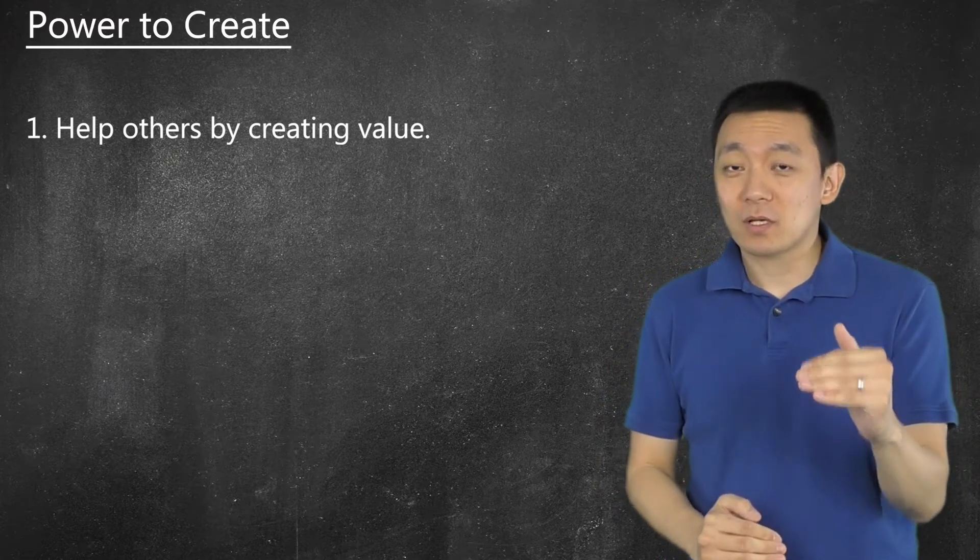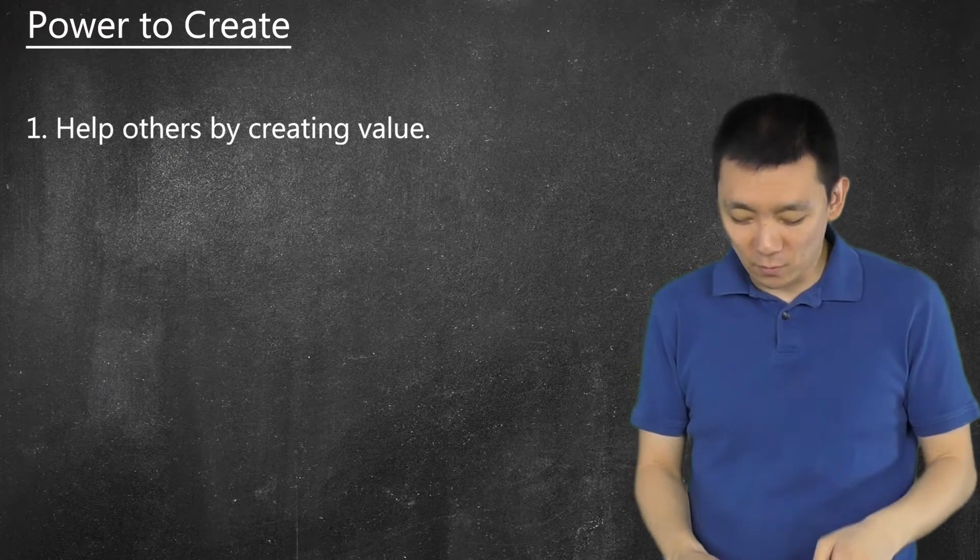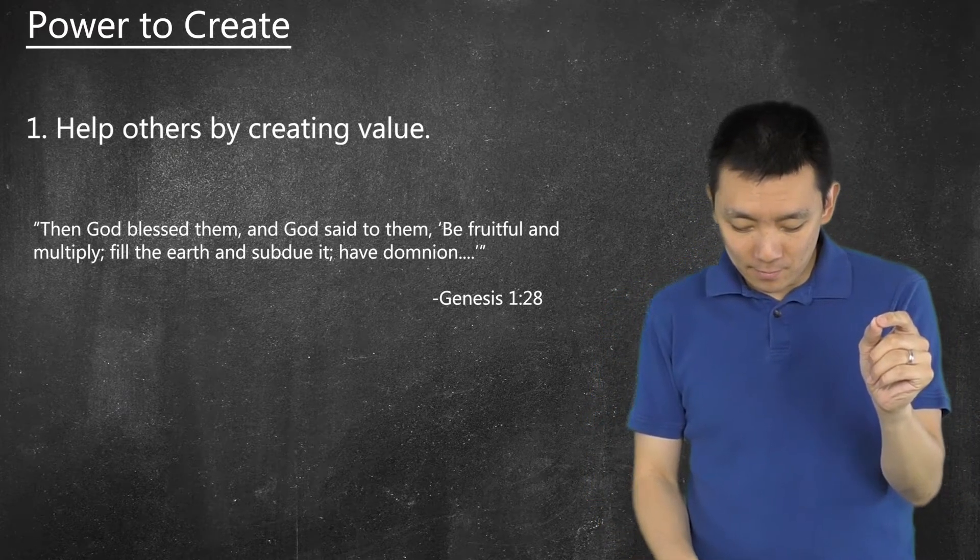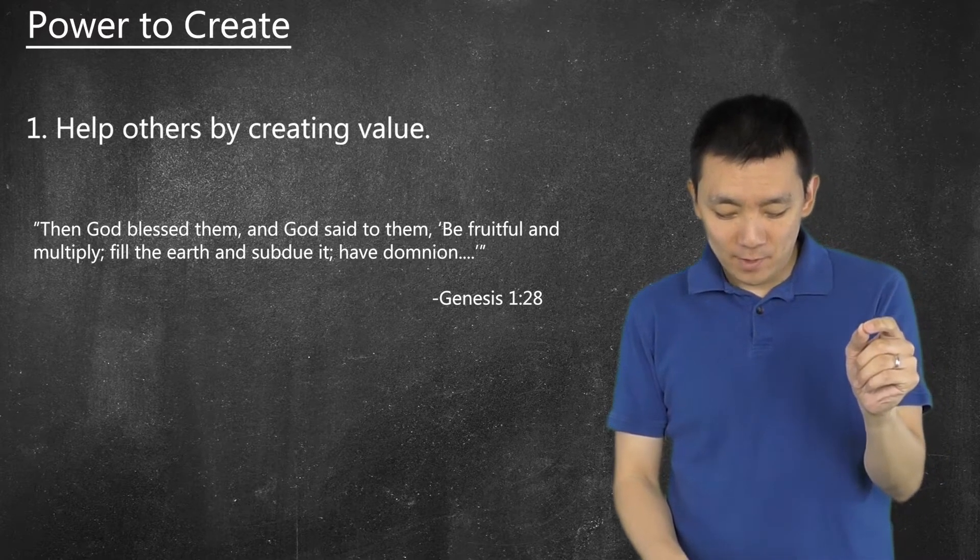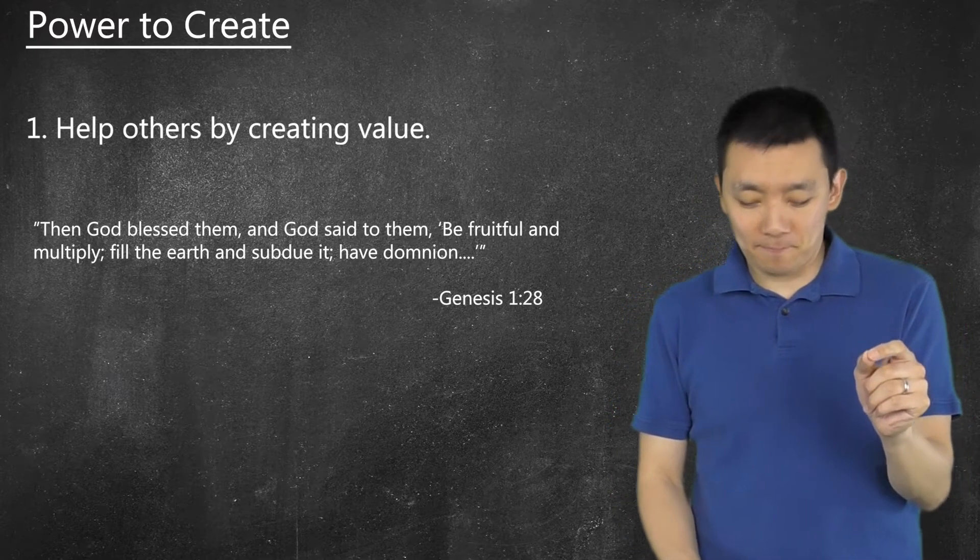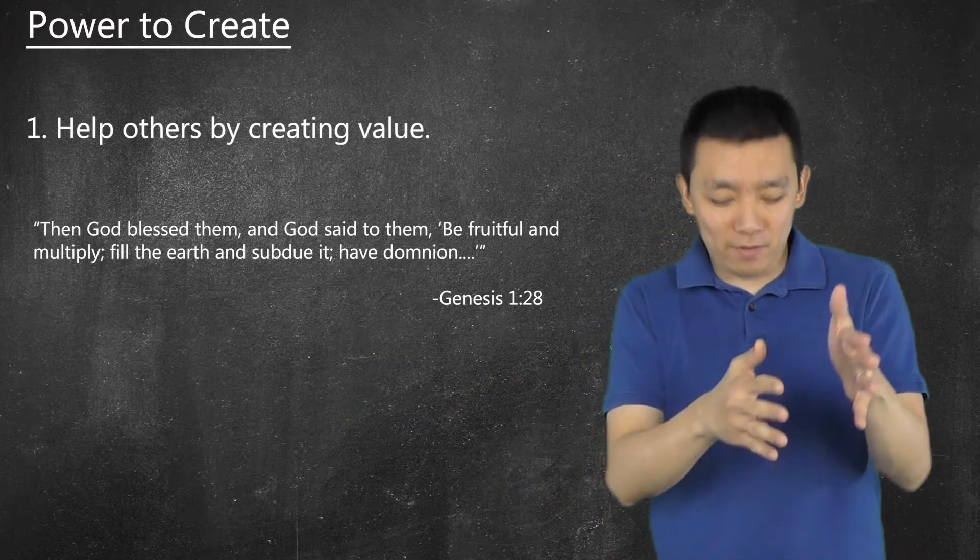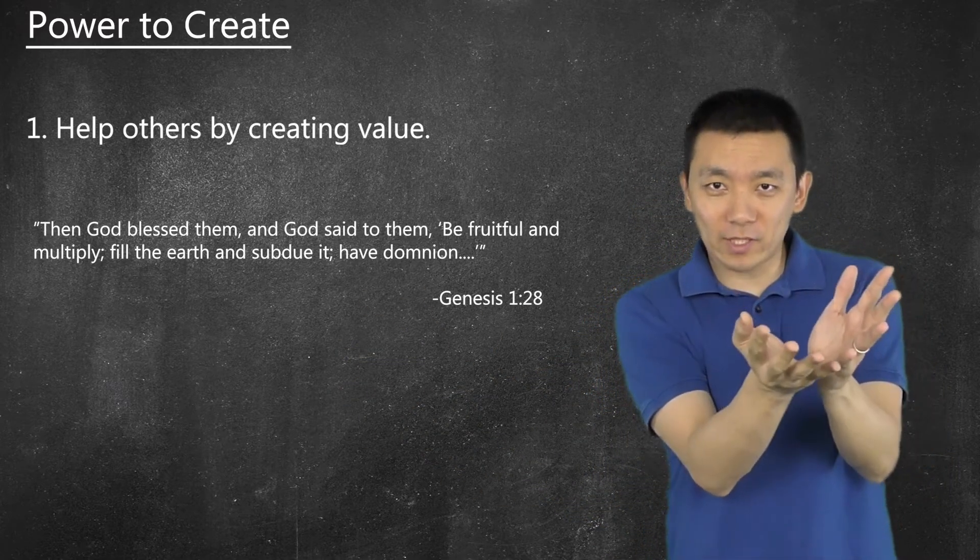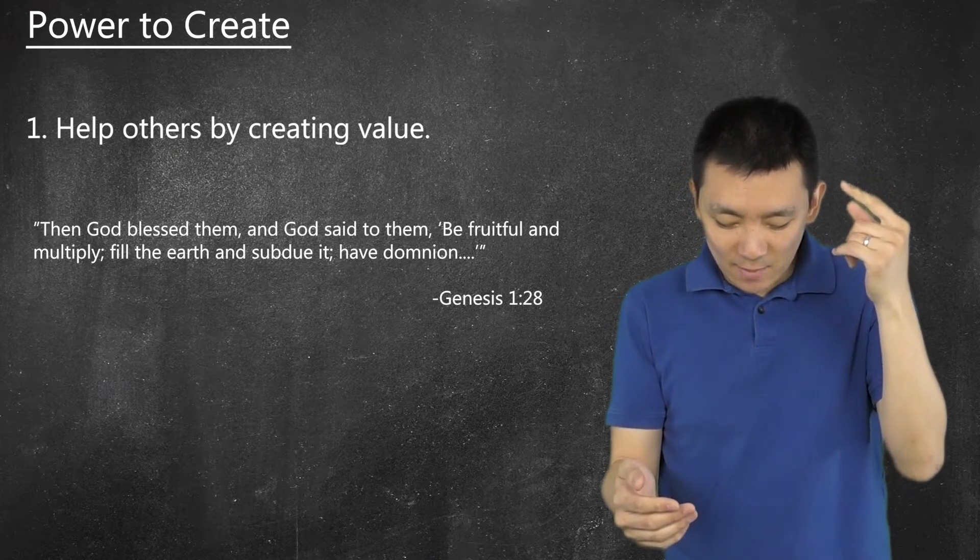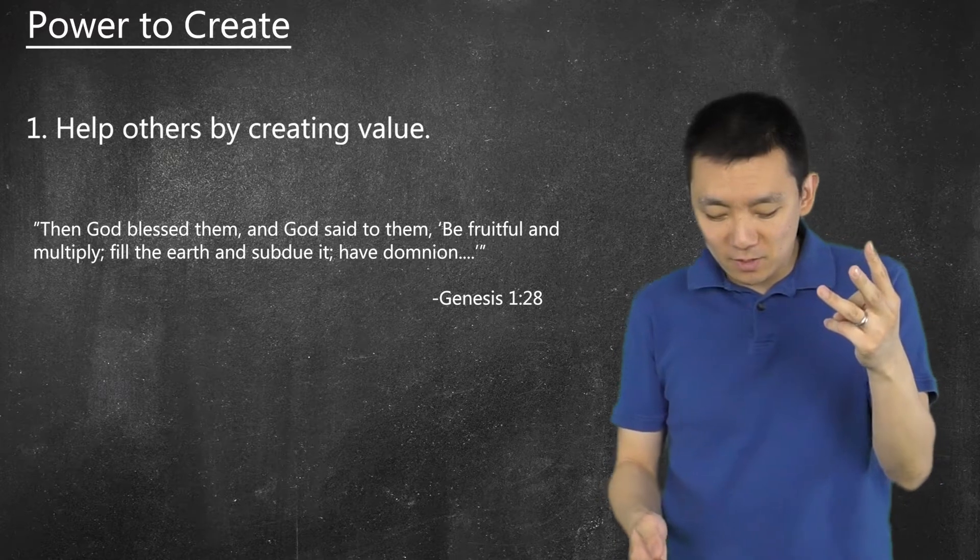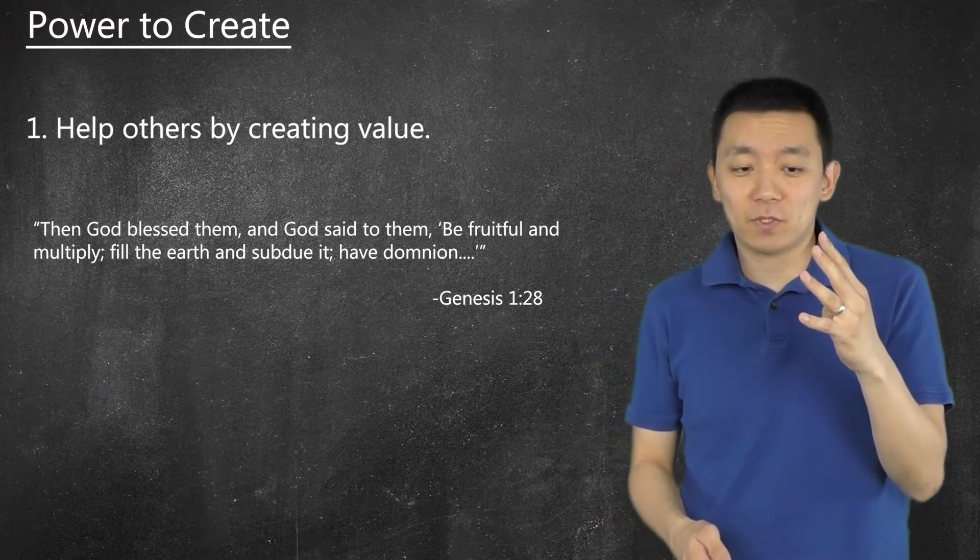The next four takeaways come from this one verse in Genesis chapter 1, verse 28. Then God blessed them and God said to them, Be fruitful and multiply. Fill the earth and subdue it. Have dominion. And then He talks about other things. But there's four things in there. He says, God blessed them and God said to them, Be fruitful and multiply. Fill the earth and subdue it. Have dominion.